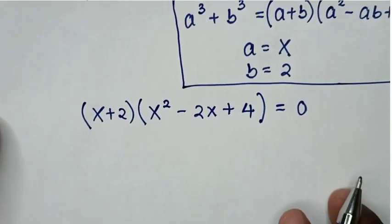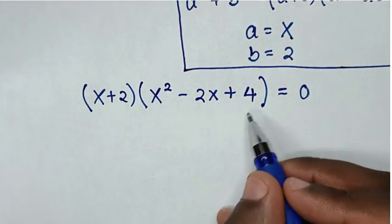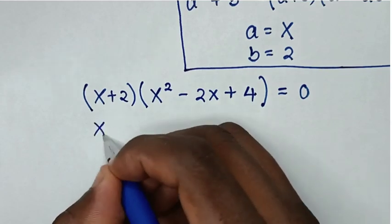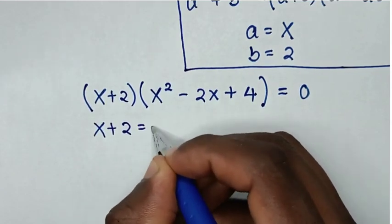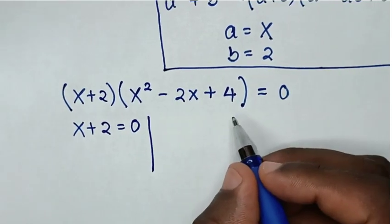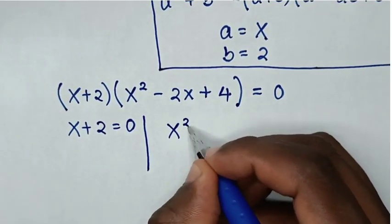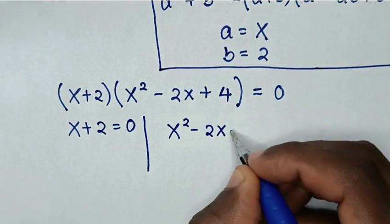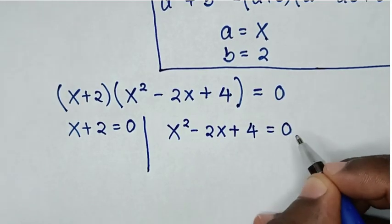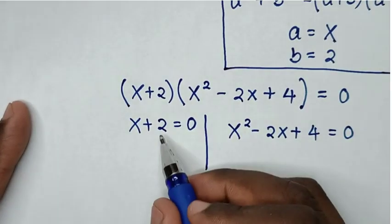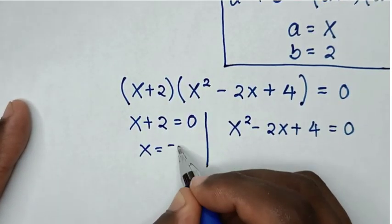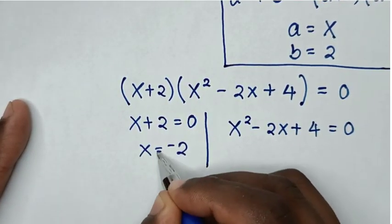Now from this equation we have two solutions. The first solution is x + 2 = 0, and the second solution is x² - 2x + 4 = 0. From the first solution, we take 2 to the right side, so x = -2.